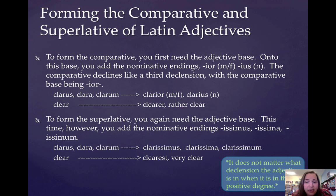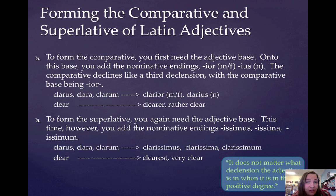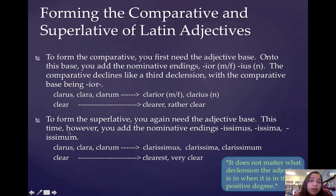Let me bring your attention to this note at the bottom: it doesn't matter what declension adjective these adjectives are in the positive degree. First/second adjectives, third adjectives — they all form their comparative and superlative the same way. So here clarus, clara, clarum is a first/second declension adjective, but when it becomes comparative, it's going to decline like a third declension.